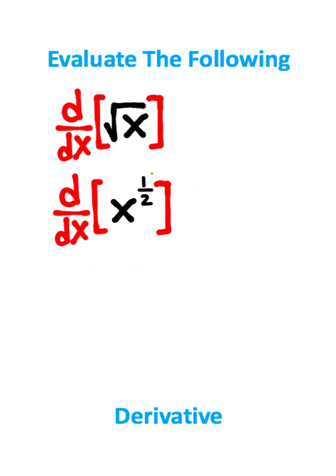The nice thing about writing the derivative like this is we now have an exponent, which means we can do the derivative power rule. If you don't know how to do the derivative power rule, it works like this.